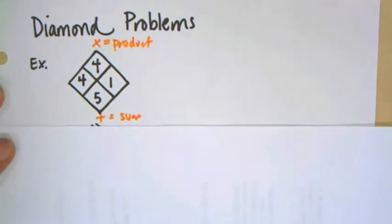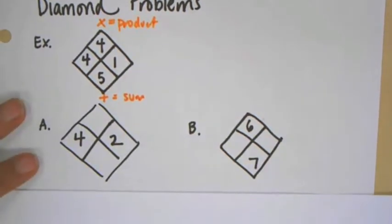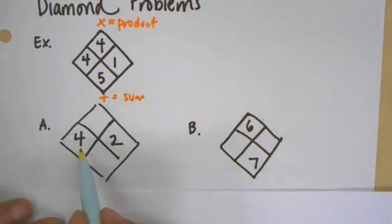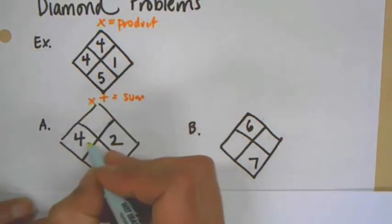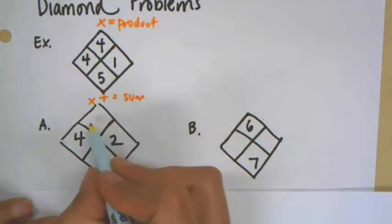So let's look at some examples here of just some strategies that you can use. Once again, these two numbers, when you multiply them together, it'll be this top number. So four times two is eight.